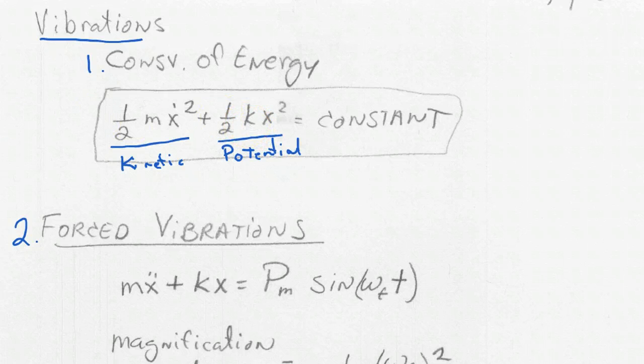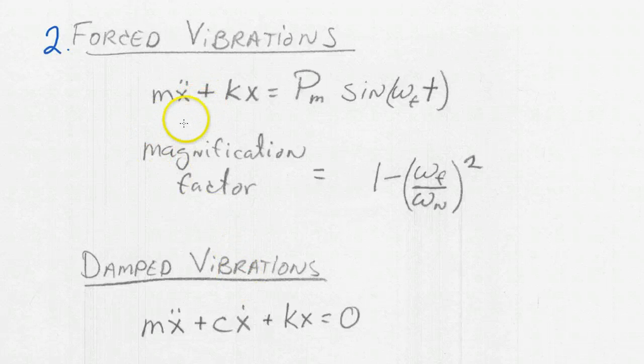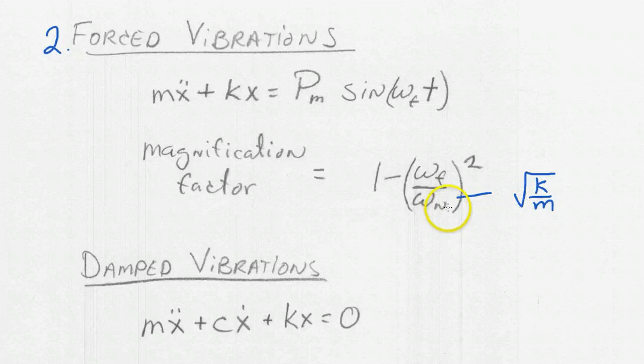Now for forced vibrations, we wrote the equation this way, where we had the same on the left-hand side, but we put the forcing term in here, where this is the frequency of the forced vibrations, ω_f. And we defined a magnification factor, which is 1 minus the forcing frequency divided by the natural frequency squared. This magnification factor tells you something about how much the amplitude grows, and it's highly dependent upon the relationship between the forcing frequency and the natural frequency.